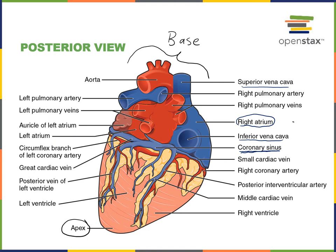Blood flows from the right atrium down into the right ventricle, and then from the right ventricle out into the pulmonary trunk, which branches into the right and left pulmonary arteries carrying deoxygenated blood to the lungs where it becomes oxygenated. This oxygen-rich blood flows back through the pulmonary veins into the left atrium, then into the left ventricle, and out into the aorta. The aorta is a large elastic artery that stretches as it receives high-pressure blood from the left ventricle and branches to distribute oxygen-rich blood throughout the body.